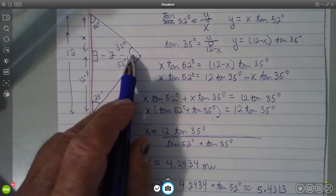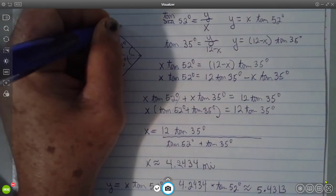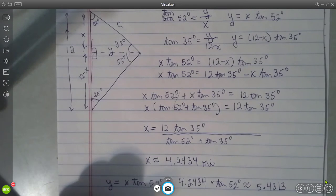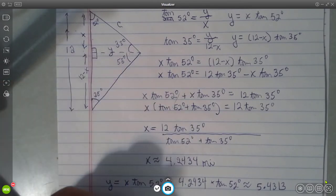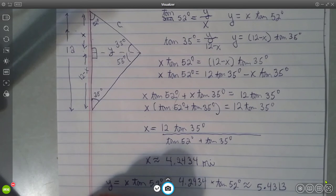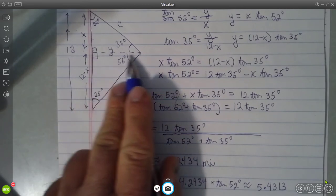C squared is equal to a squared. Let's take that x here, 4.2434 squared, plus y squared.